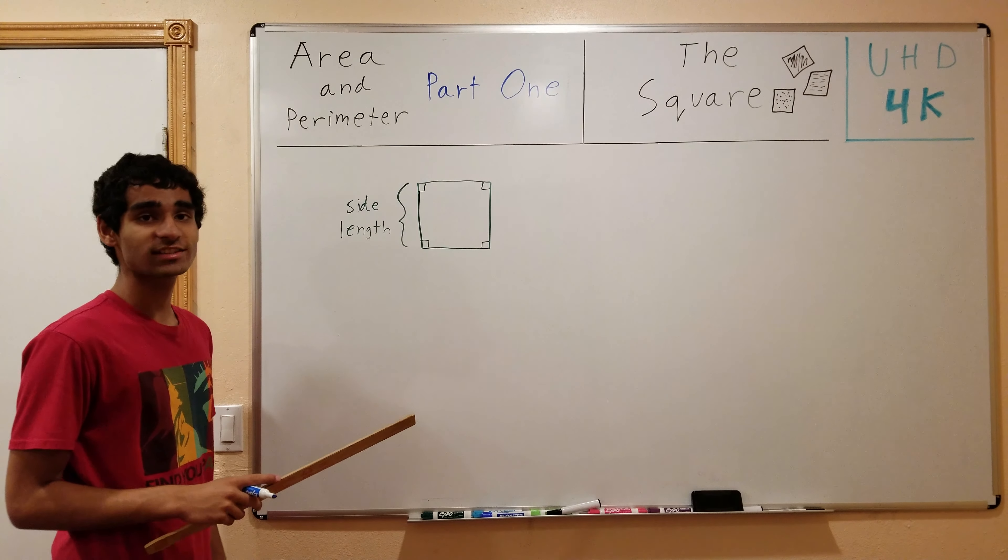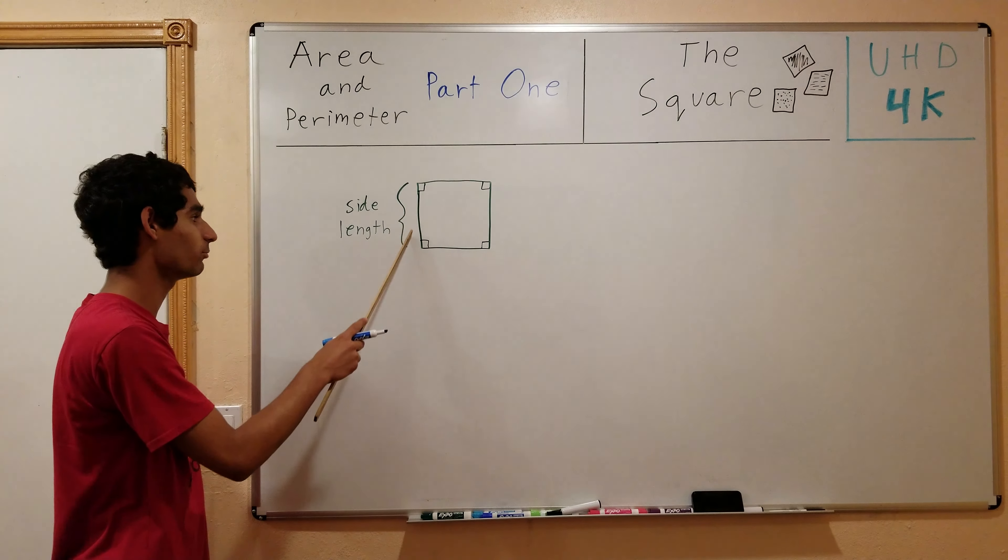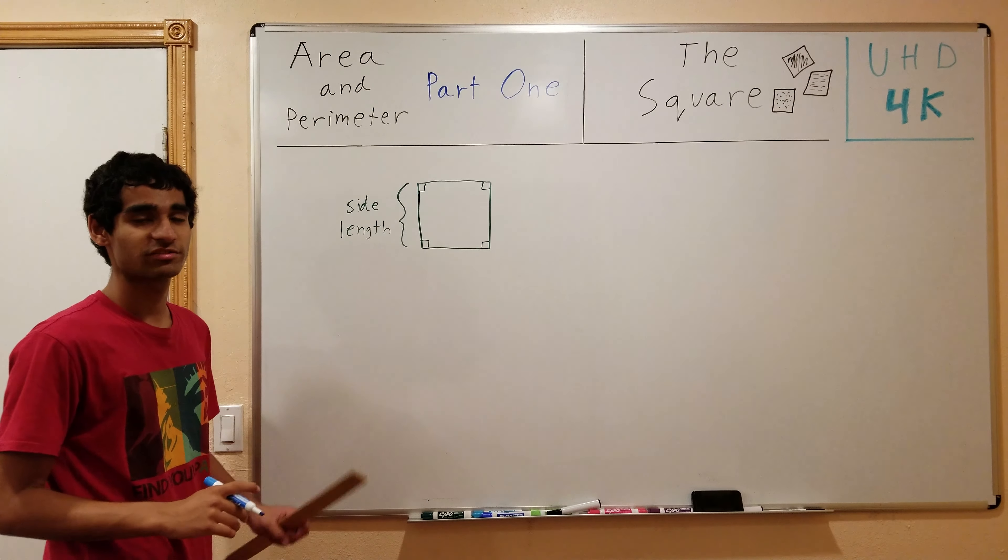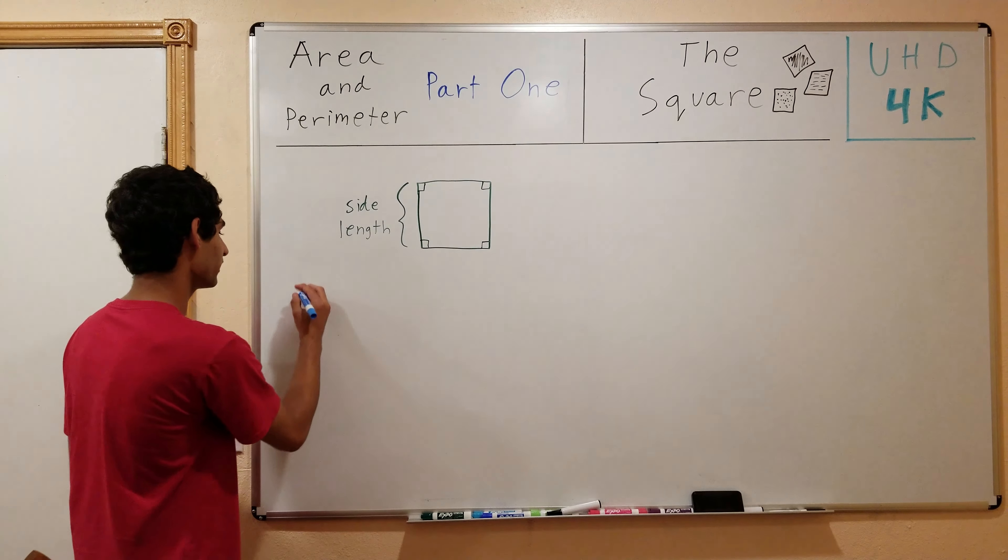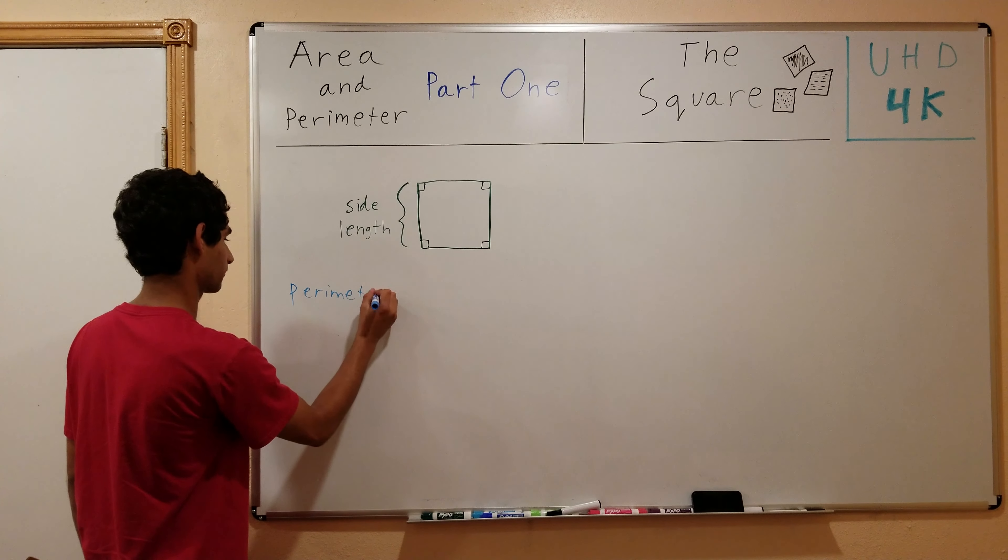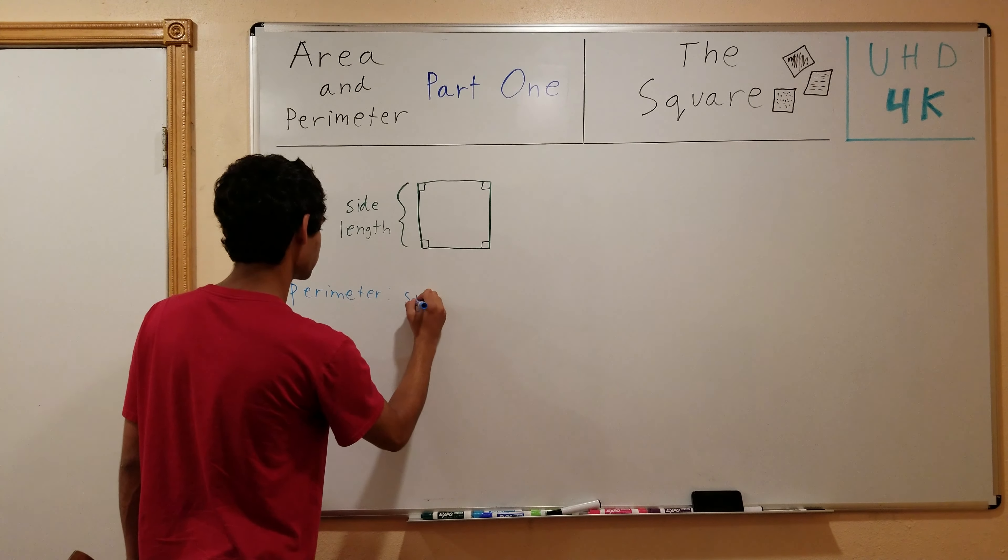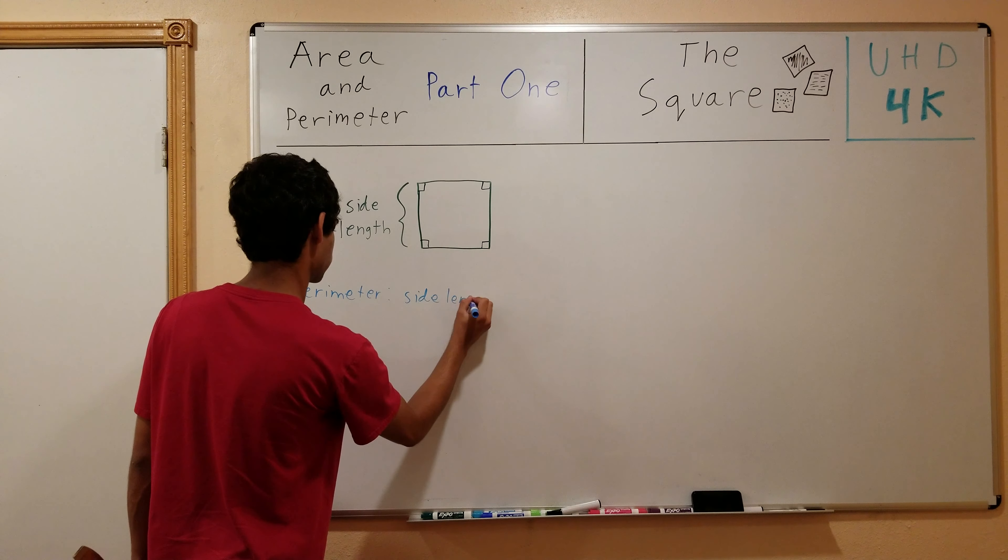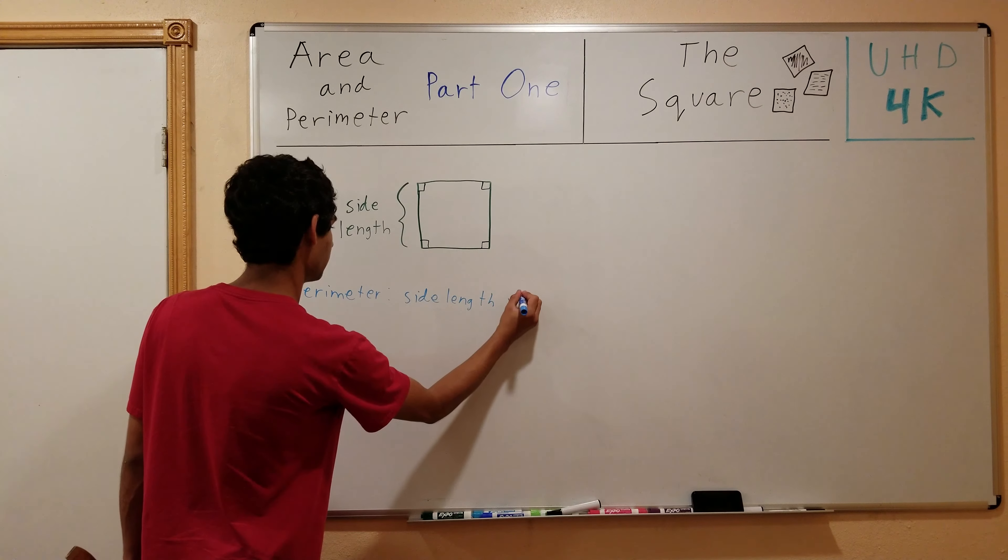So since all the sides are of equal lengths, you simply take the length of one side and multiply it by 4 to find the perimeter of the square. So let me write that down. Perimeter equals side length times 4.